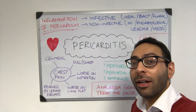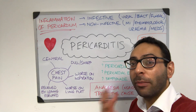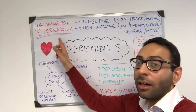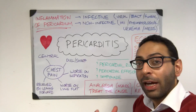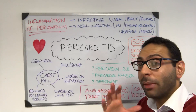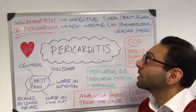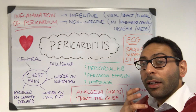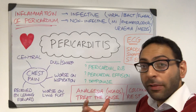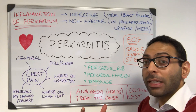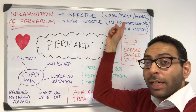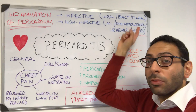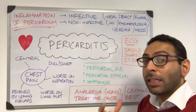A quick read about pericarditis, or inflammation of the pericardium. There are lots of different causes — both infective and non-infective. Infective causes include viral infections such as Coxsackie virus, Epstein-Barr virus, and HIV, as well as bacterial causes like staphylococcal infections, and fungal causes too.